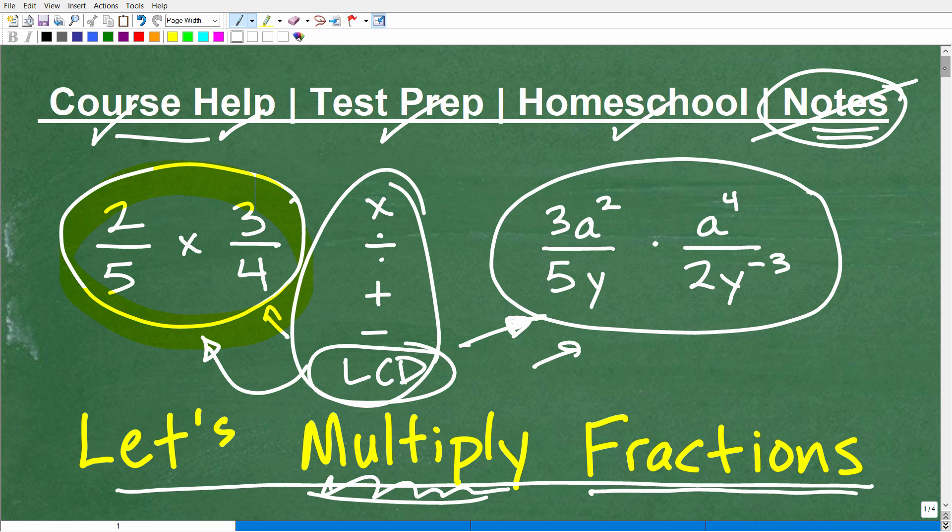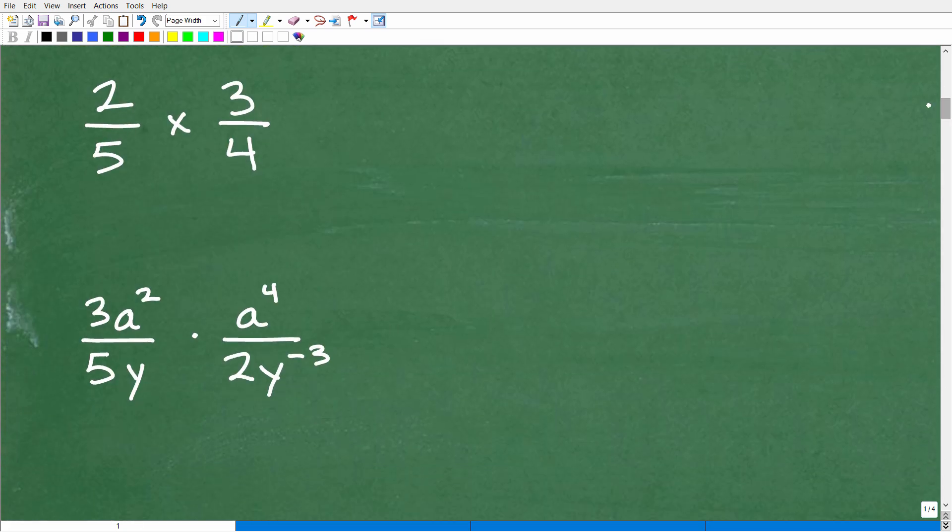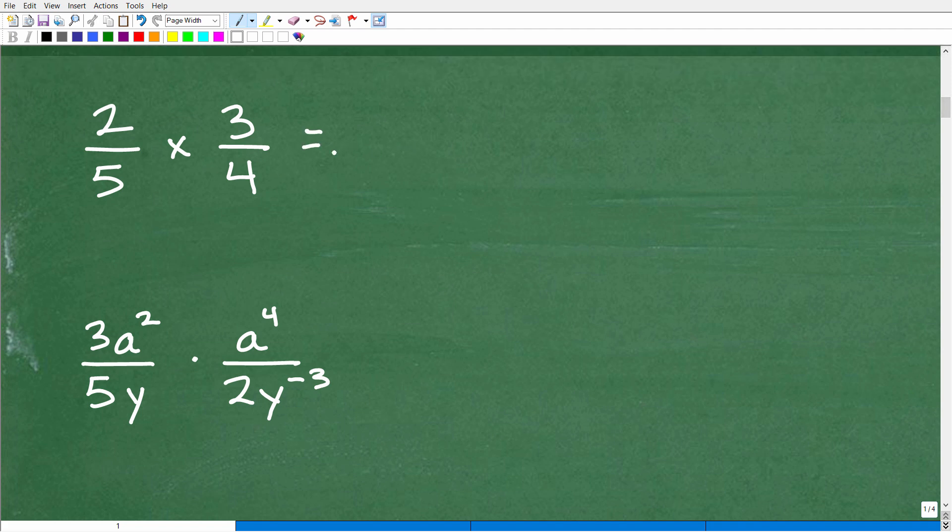All right. So let's get into multiplying fractions. And we're just going to focus on these two problems. We're not going to do a ton of problems. I'm really going to highlight what you need to be thinking about, especially when you're dealing with fractions with variables. So let's go down here and start off with this lovely basic fraction problem. And the multiplication of fractions, it's awesome because it's like the easiest thing you could possibly do. So when you're multiplying fractions, the rule is we multiply the respective numerators, and we're going to put that over the product of the respective denominators.